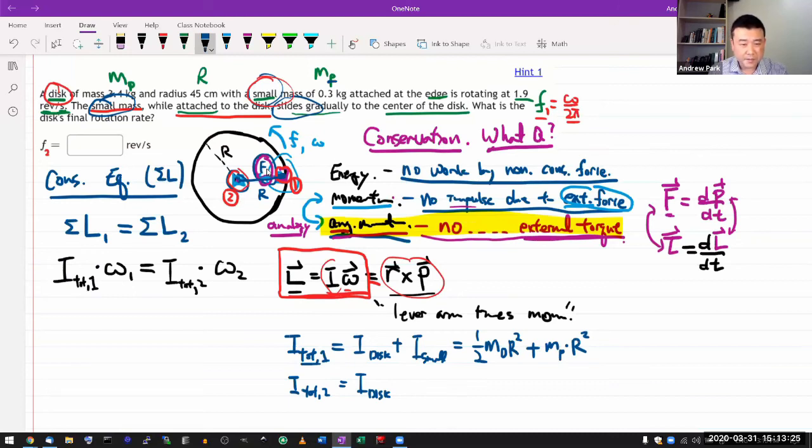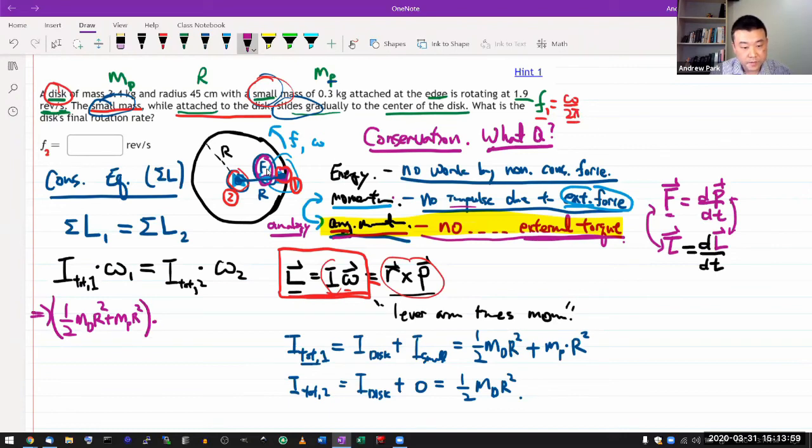At snapshot 2, this will be slightly different. I still have the rotation inertia of the disk, that hasn't changed. What changes is when the point mass is here at the center, it has zero lever arm, so it has zero rotation inertia. So it'll just be one half mₐ R².